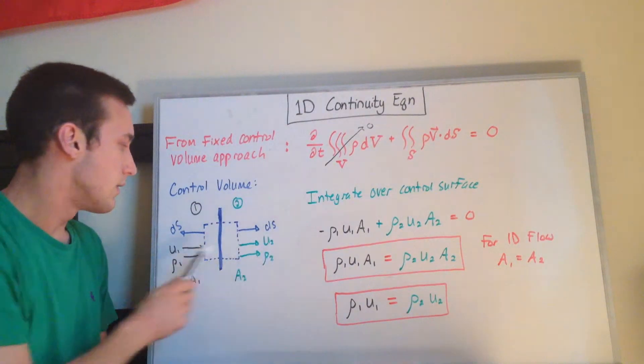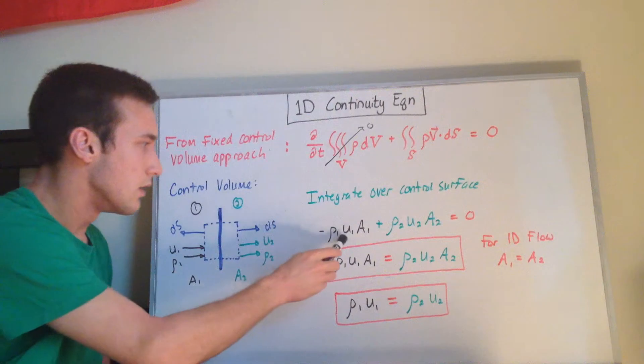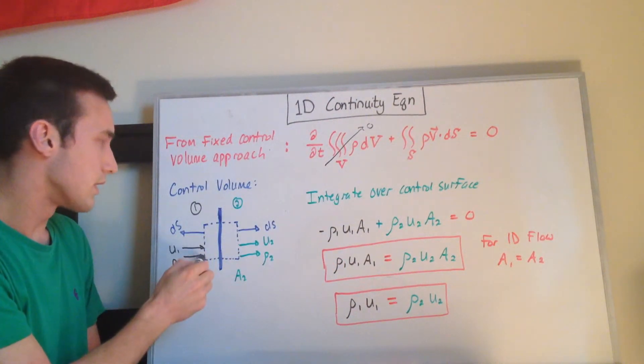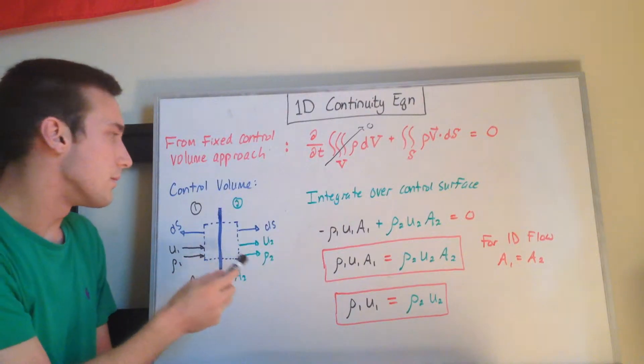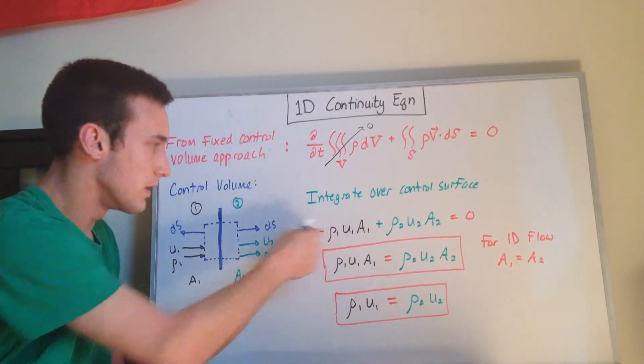And the reason that there's a negative here is because u1 and ds are in opposite directions. So you get u1 times a1, because that's the area, and then the ds gives you the negative sign.